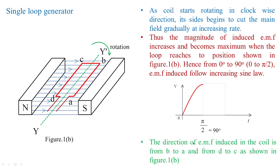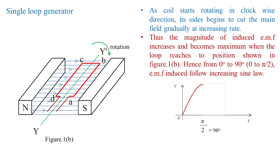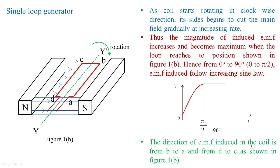In Figure 1B, the direction of the EMF induced in the coil is from B to A and D to C. The flux linkage is being cut by the coil, and the maximum condition is reached at 90°. The sine wave has increased from 0° to 90° and the EMF is at its peak.